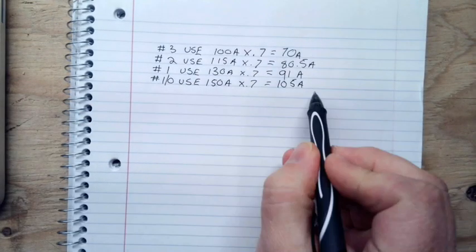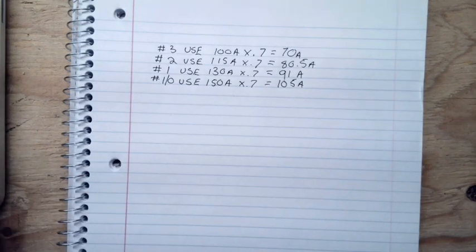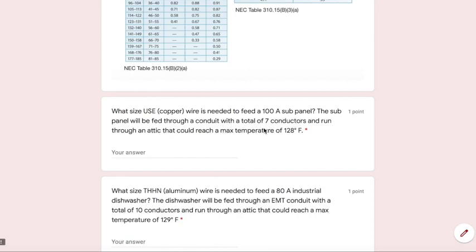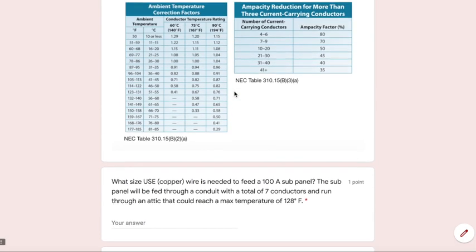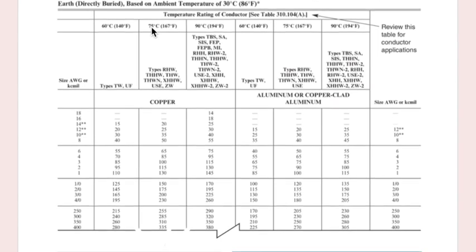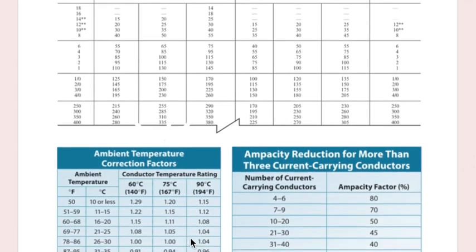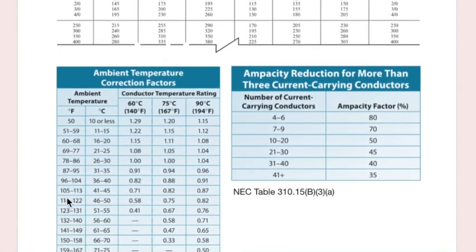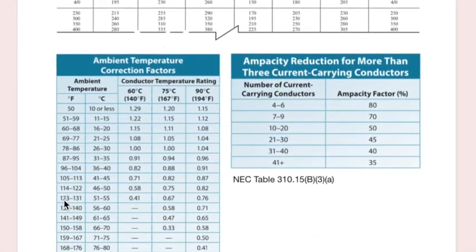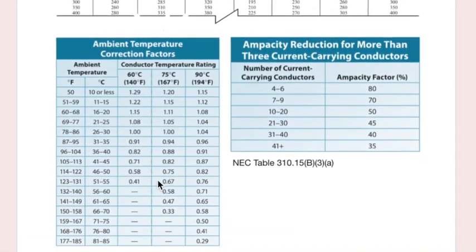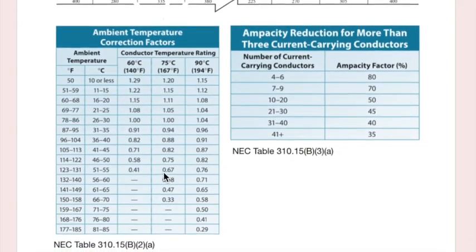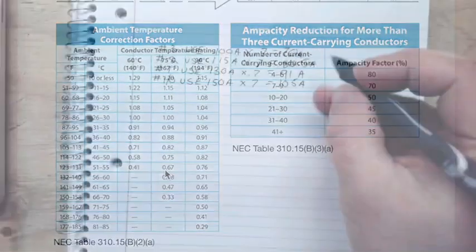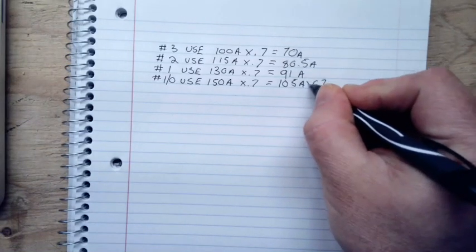So we're good adjusting for that heat, but now we still got to find that correction factor because I went ahead and said that we're going to be running through an attic that could reach 128 degrees. So now we need to take this 105 that we found off the one-ought that we think is good and figure out 128 degrees. We're dealing with U.S.E. Let's find that first. So I got U.S.E. is in the 75-degree chart. So I'm going to come down to the 75 chart. And I believe we said we're at 128. So I'm going to look for 128. 128 falls between 123 and 131.